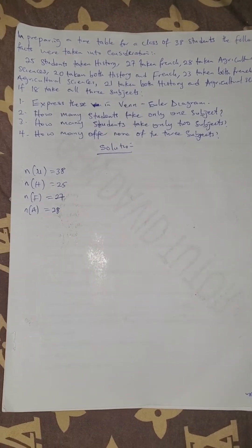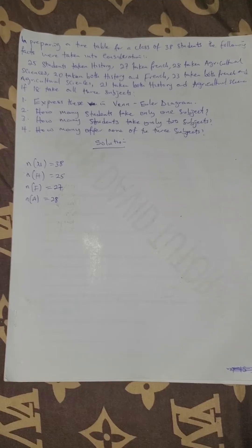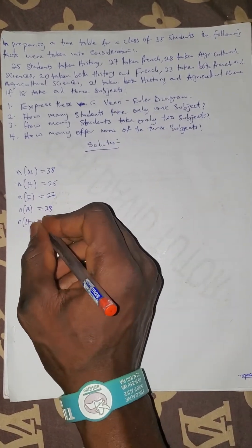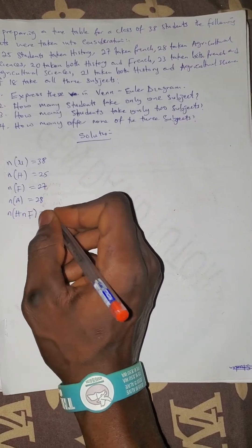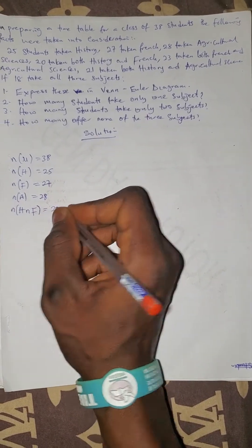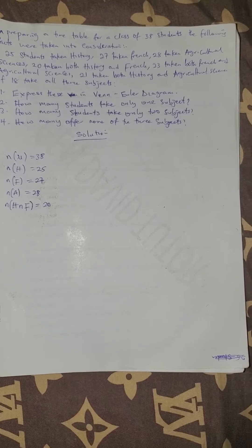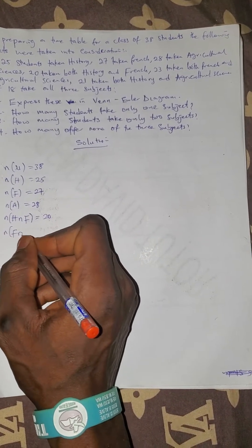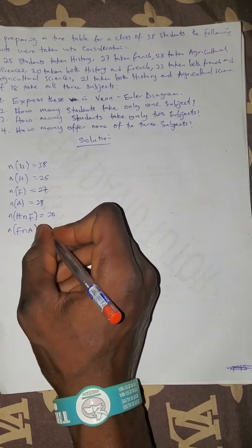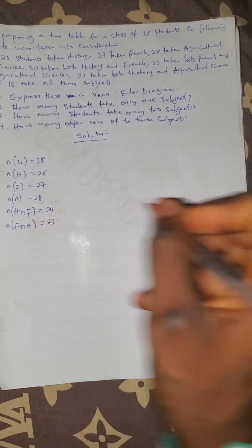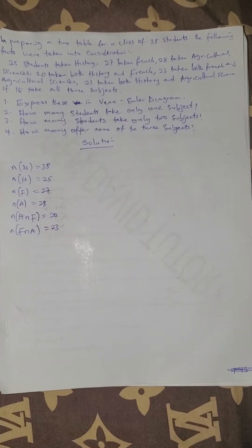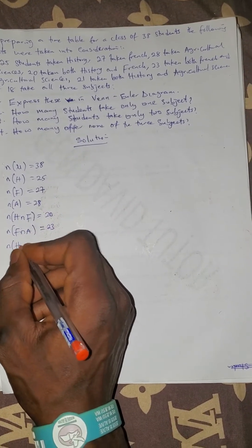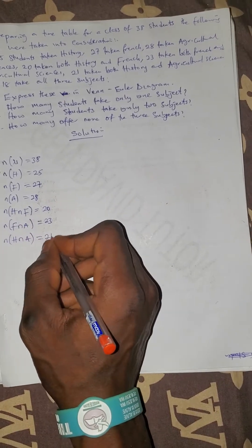20 students take both History and French, so History intersection French is 20. 23 students take both French and Greek, so French intersection Greek is 23. 21 students take both History and Greek, so History intersection Greek is 21.